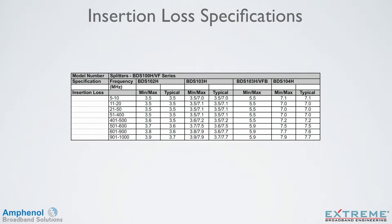Let's take a look at insertion loss specification sheets. Here we're showing a specification sheet for our broadband digital splitter series, which includes two-way, three-way, three-way balanced, and four-way splitters. On the left side is the column labeled frequency. Here we break the frequencies into eight different bands, starting with 5 MHz, going up to 1 GHz.